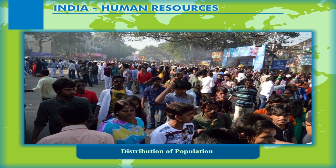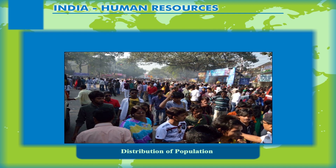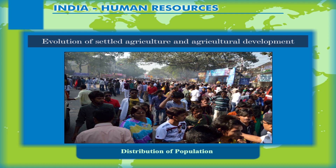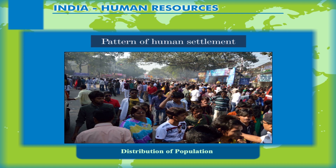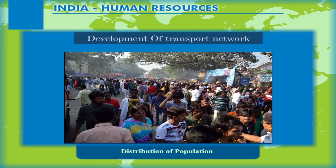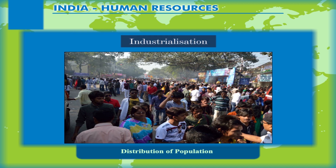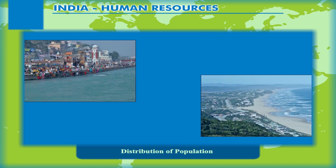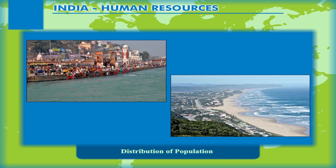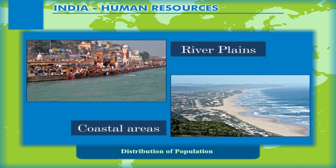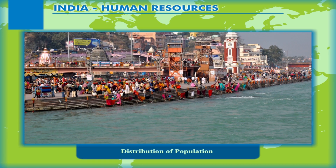Among the socio-economic and historical factors of distribution of population, the important ones are evolution of settled agriculture and agricultural development, pattern of human settlement, development of transport network, industrialization and urbanization. It is observed that the regions falling in the river plains and coastal areas of India have remained the regions of larger population concentration.